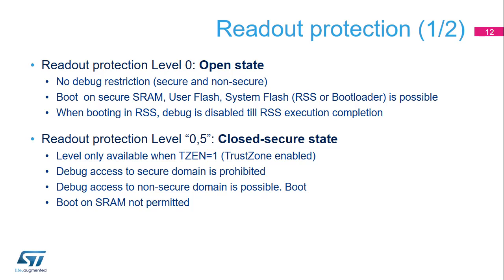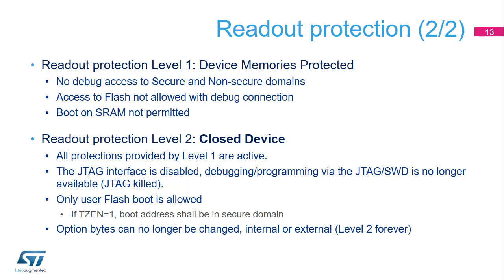Level 0.5 is an additional protection level associated with TrustZone. RDP 0.5 is available only when TrustZone is enabled. Debug of the secure domain is forbidden; only the non-secure domain can be accessed for debug. Level 1 ensures total read protection of the chip's memories, which includes the flash memory and the backup registers, as well as the SRAM2 content. Whenever a debugger access is detected or boot mode is not set to a flash memory area, any access to the flash memory, the backup registers, or SRAM2 generates a system hard fault, which blocks all code execution until the next power-on reset. Note that option bytes can still be modified in level 1.